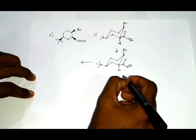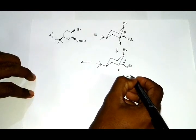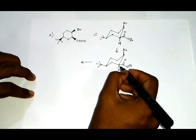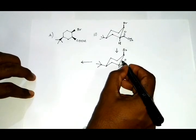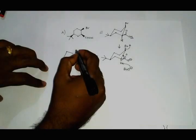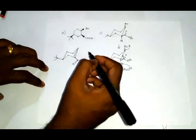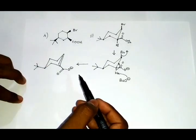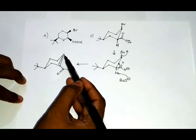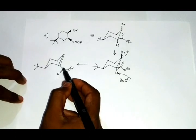The carboxylic acid group here will not take part in the reaction and hence will not be eliminated. The tertiary butoxide group, as given in the question, will attack this hydrogen; this bond will fall here and this bromine will leave.